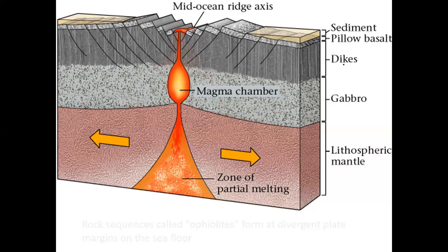The slide shows where magma forms in the mantle and how it rises. The chemistry of magma changes as it rises — from ultramafic in the mantle to mafic as it rises through the lithosphere. When that magma solidifies in different regions, we get different types of rocks. If it solidifies in the mantle, the rock type we get is peridotite — that's an ultramafic rock.